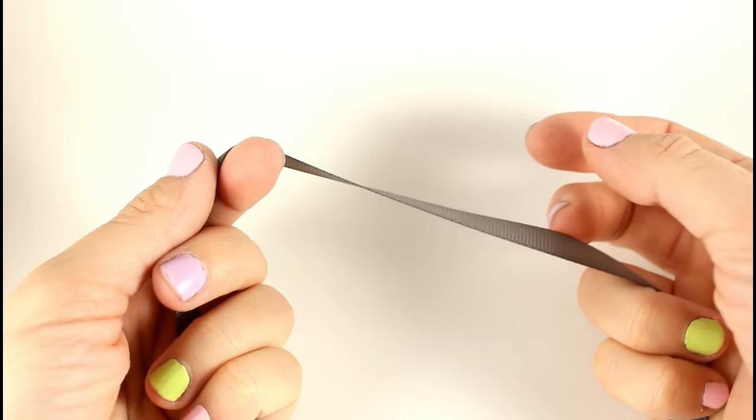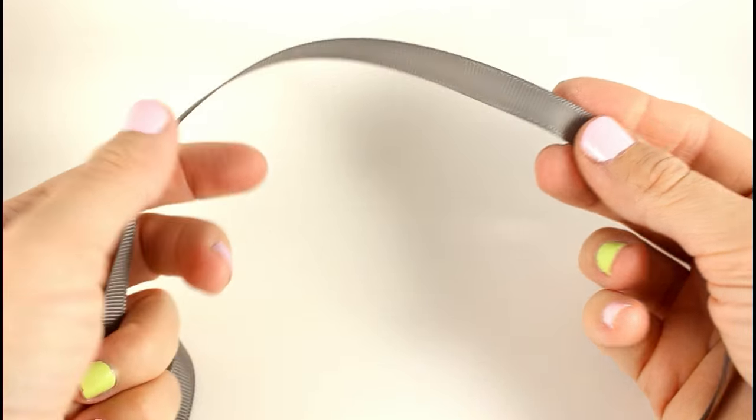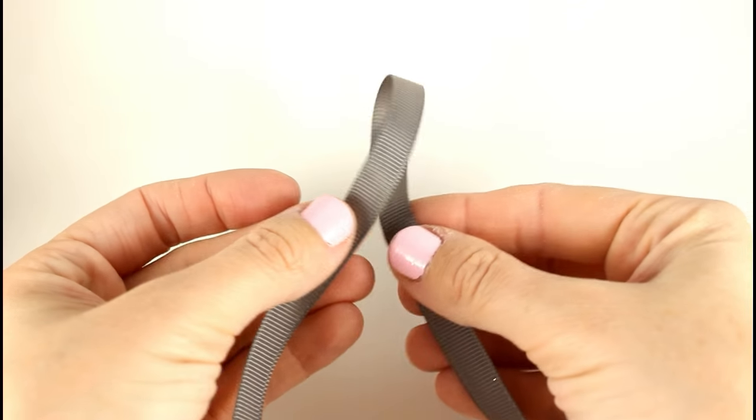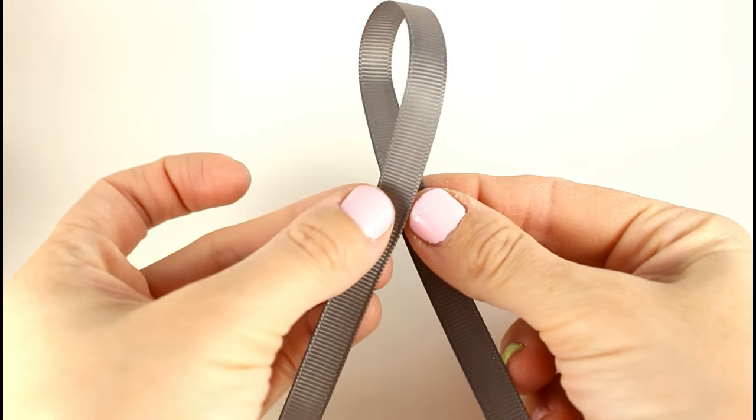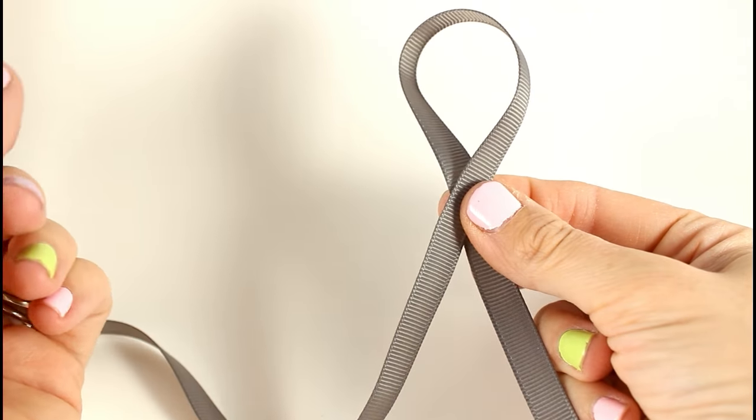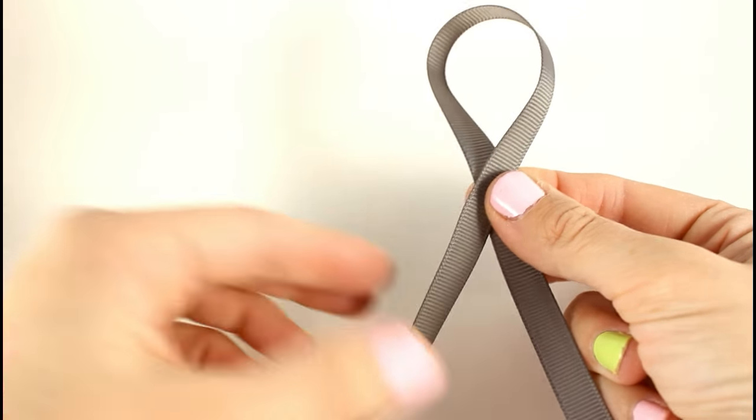Take your ribbon and you're just going to make a little bunny ear. So you take your fingers, hold your ribbon like this, and then you just put it together like that. You're going to hold this in your right hand.